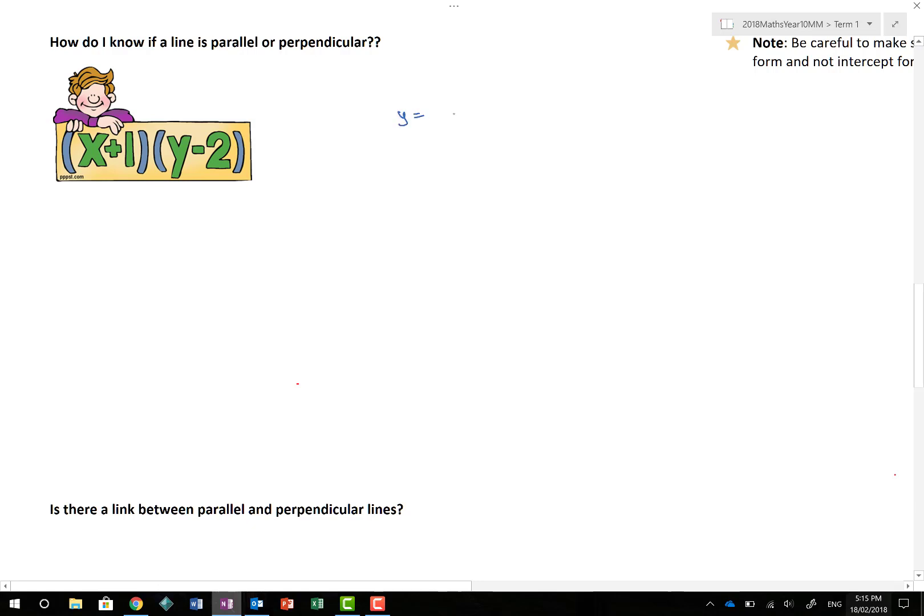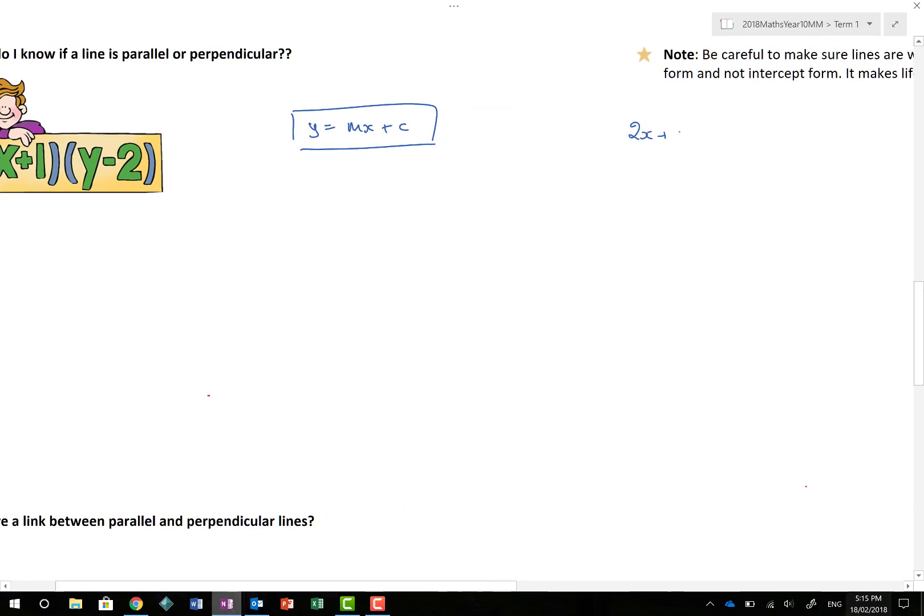When you've got equations in the form y equals mx plus c, and we really like them to be in that form, and if they're not rearrange them. For example, if I had 2x plus 3y equals 6 and I wanted to compare some gradients, I would rearrange that. 3y equals negative 2x plus 6, divide both sides by 3 to get y on its own, which gives me minus 2 thirds x plus 2.